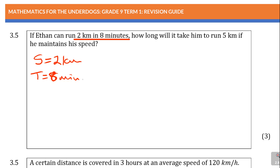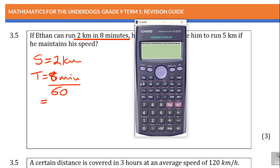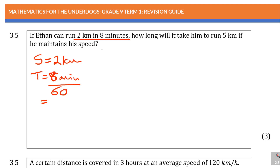To go from minutes to hours, you divide by 60. So you take 8 minutes and divide by 60. You can leave it as 8 over 60, or you can try with your calculator to see if it simplifies to a simpler number. You can also leave it as a simplified fraction. That gives you two versions to work with.